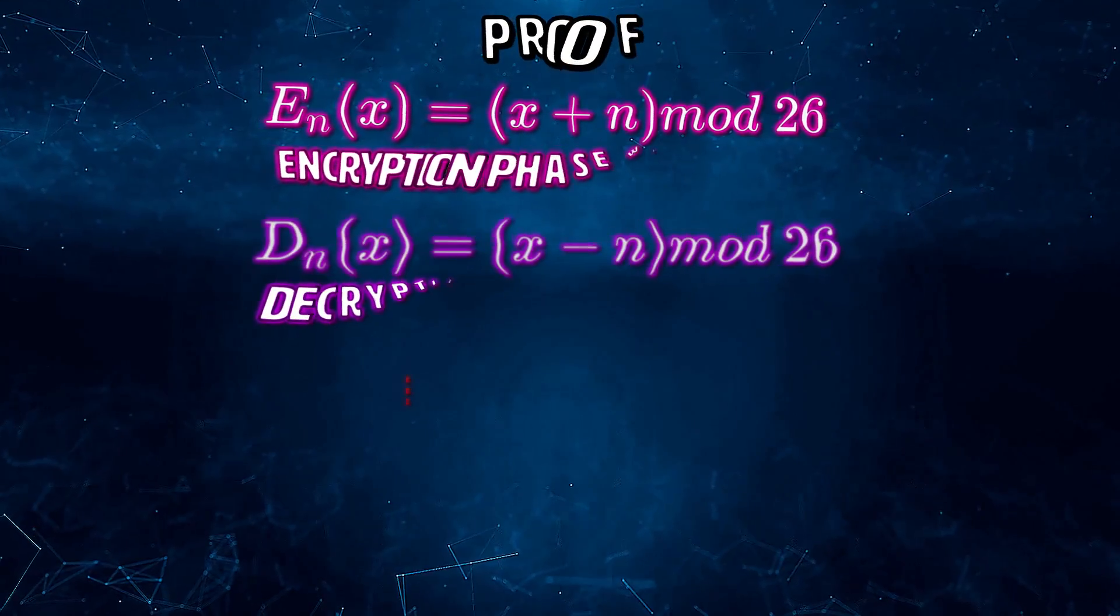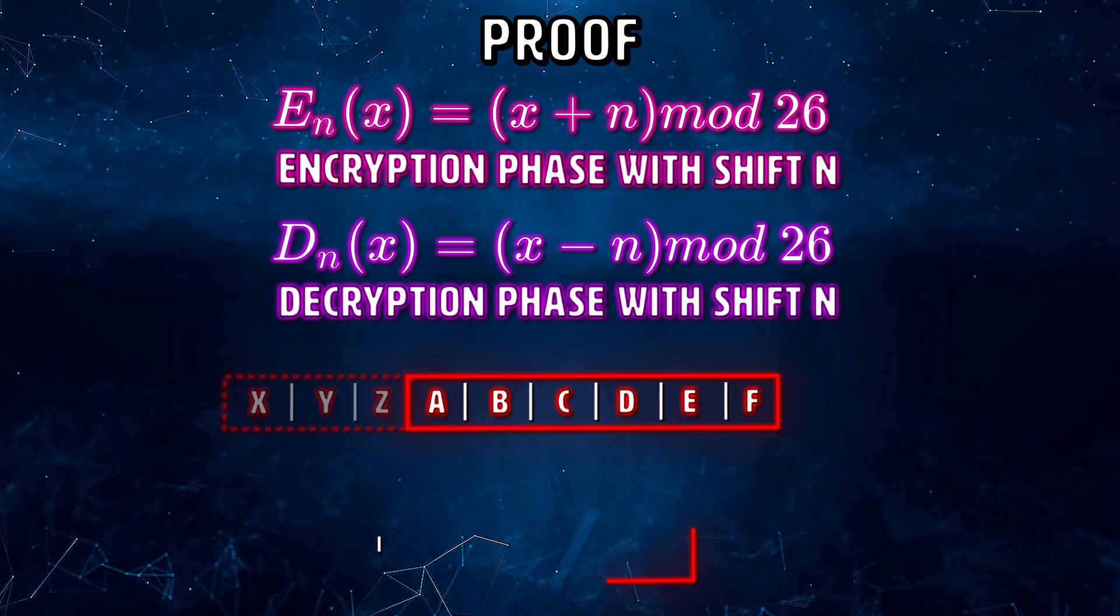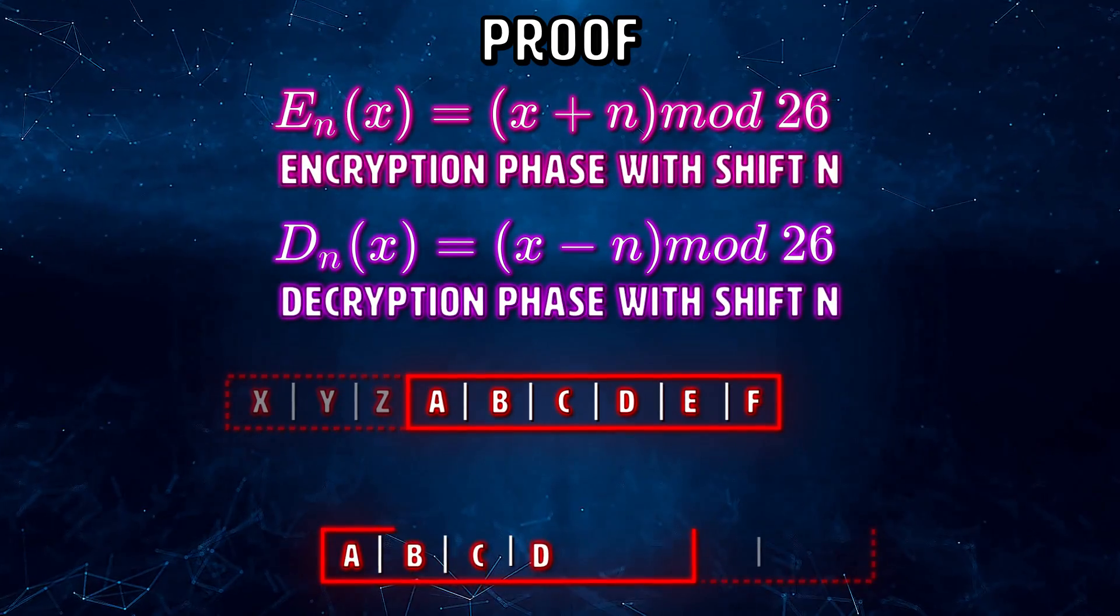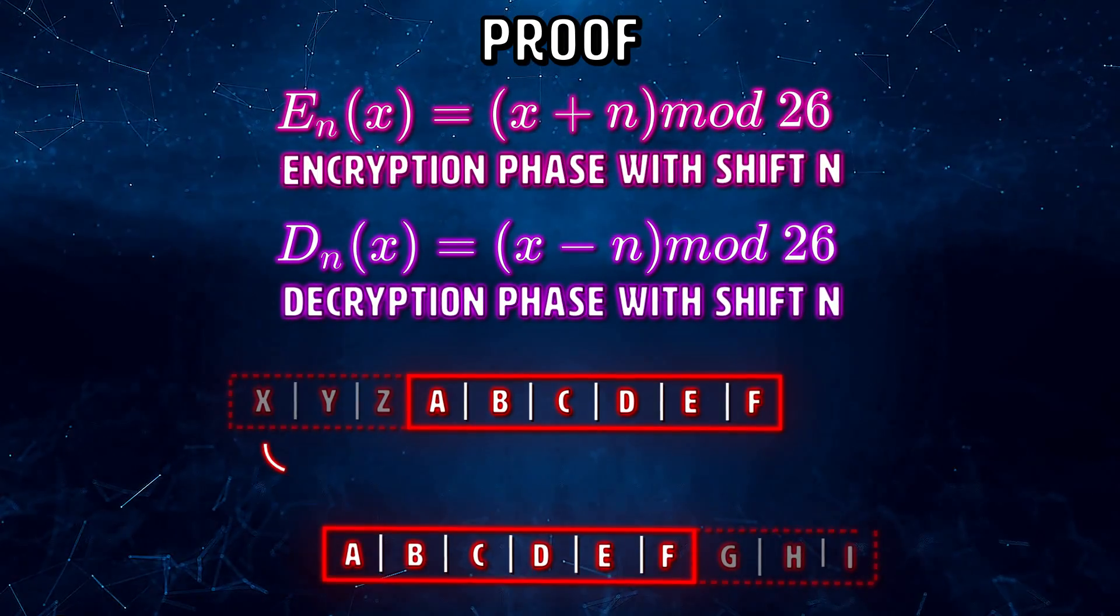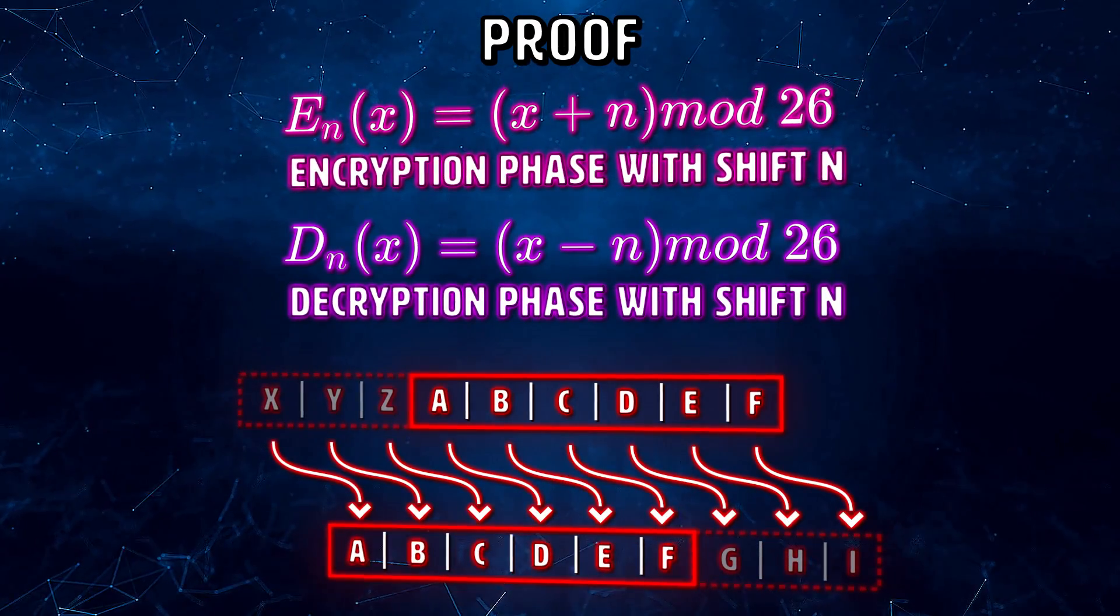So, logically speaking, we can define the proof of our algorithm with the following equation where the decrypted version of the text is equal to each character shifting n degrees out of 26 possible characters. MI6 is going to be very pleased with this. We'll probably get a double O status now. License to code.